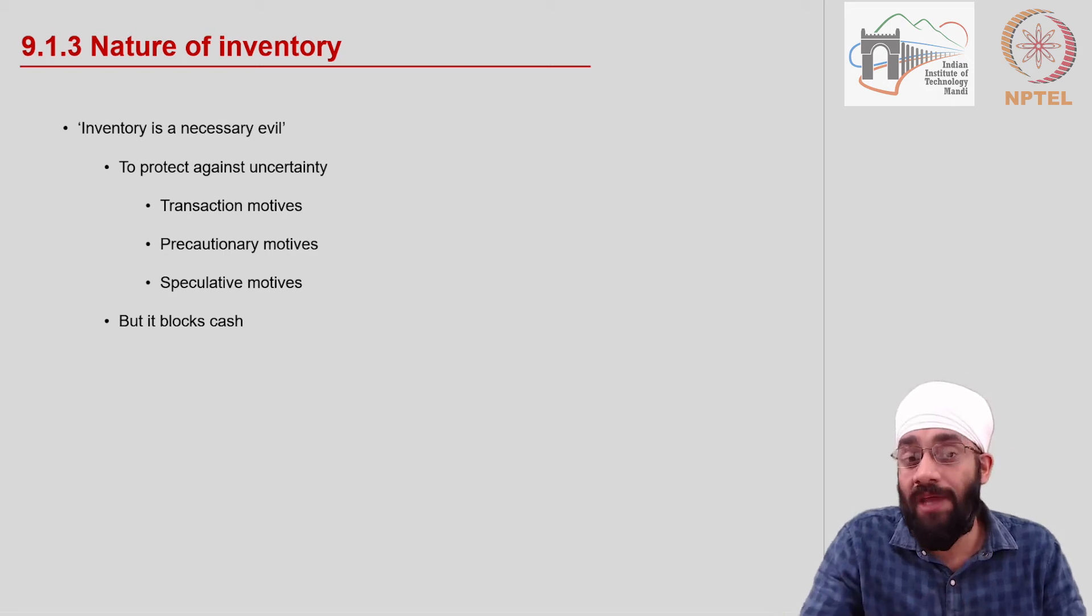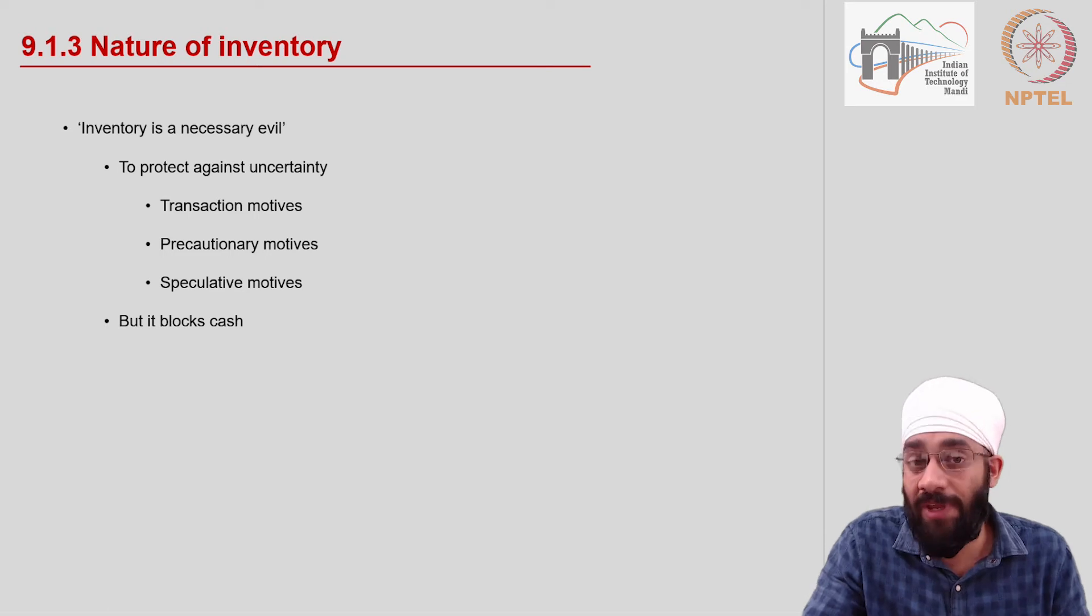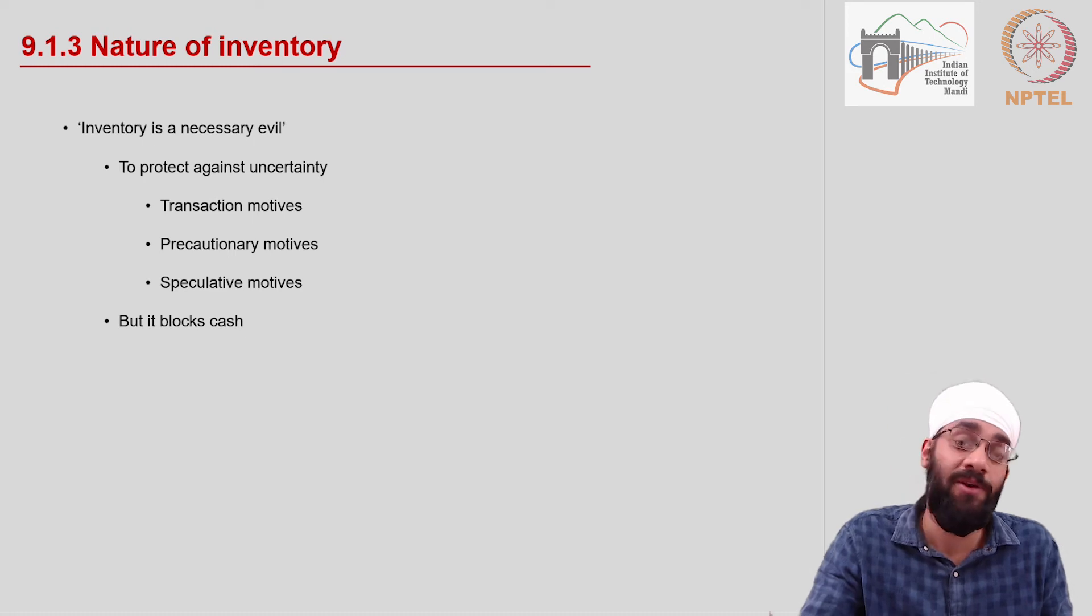During all this time the business has invested, has blocked the money into this stock of raw material which is being processed. Therefore in that sense it is called an evil. Of course you're going to sell off this stock by converting it into finished product and then you're going to make profit.